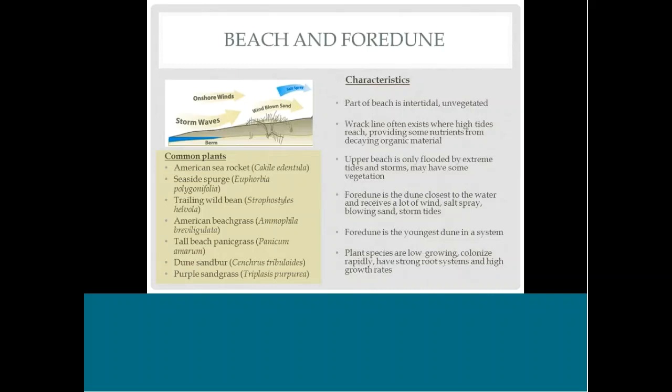The foredune is the youngest dune in the system. Wind tends to blow from the shoreline toward inland, so the foredune is youngest and most intense in terms of conditions — receiving a lot of wind, salt spray, and blowing sand. Because of those intense conditions, the plants there are very well adapted: they grow low to reduce wind effects, establish quickly, have high growth rates and strong root systems, and once established they help hold the dune together by holding sediment in place.